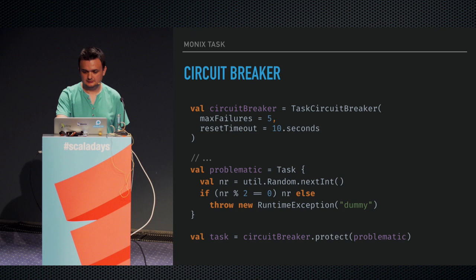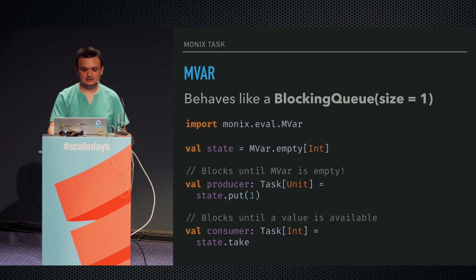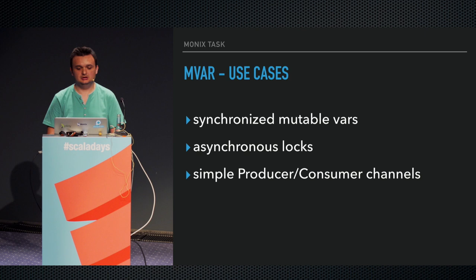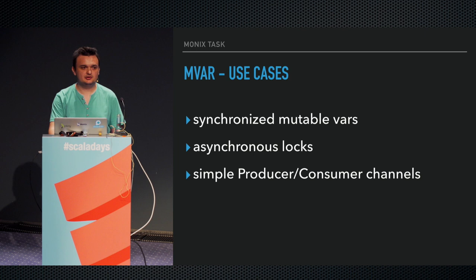MVar is another concurrency abstraction — it behaves like a blocking queue of size one, but works with tasks and has a totally non-blocking implementation. It's an abstraction that comes from Haskell. You can use it to do synchronized mutable variables, to model asynchronous locks, or to do simple producer-consumer channels. There is an article on the website about it, and I encourage you to look at that for more details.